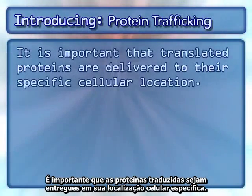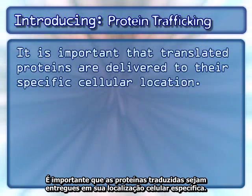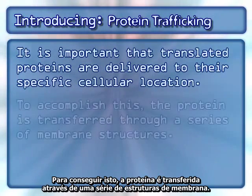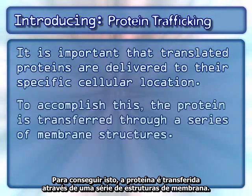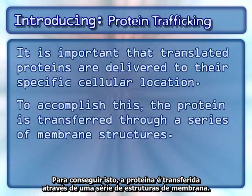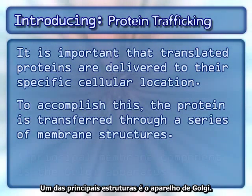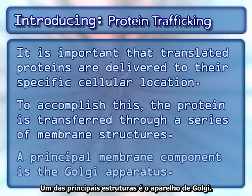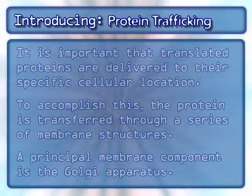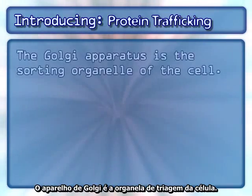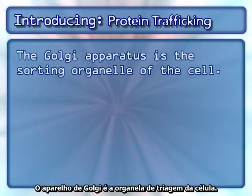It is important that translated proteins are delivered to their specific cellular location. To accomplish this, the protein is transferred through a series of membrane structures. A principal membrane component is the Golgi apparatus, which is the sorting organelle of the cell.